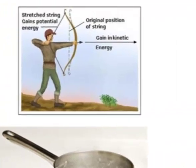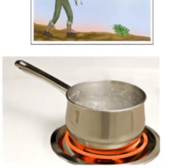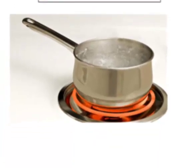The archer here — by pulling back on the string, the archer is putting a lot of potential energy into his bow. When he lets go, he's going to convert that stored potential energy into kinetic energy.